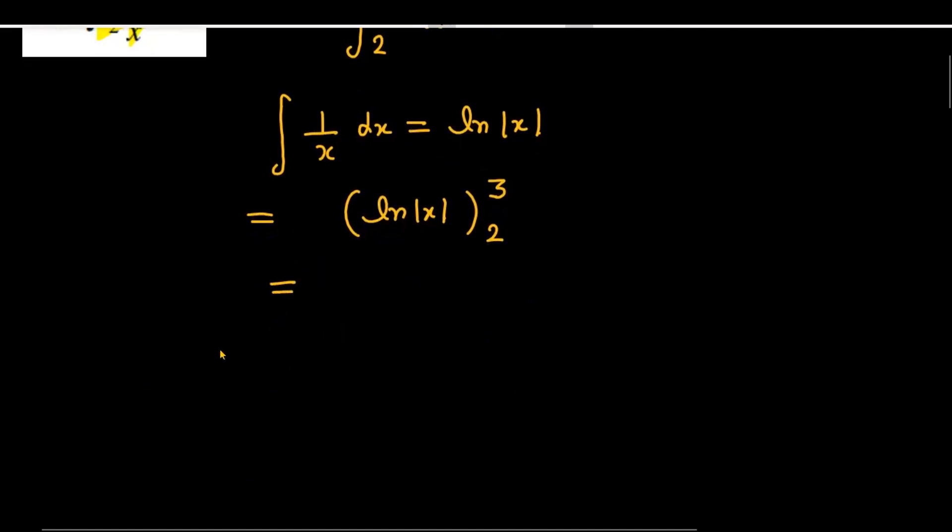So now we will simplify it. To apply the limit, first you apply the upper limit which gives ln mod of 3, minus, then after you apply the lower limit which becomes ln mod of 2.